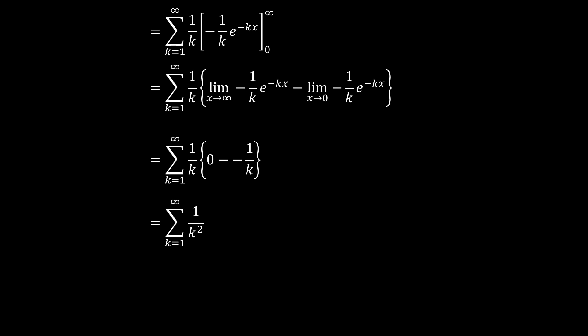This is a famous summation. If you are not familiar with it, search for the Basel problem. When you sum 1 over k squared from k equals 1 to infinity, the answer is pi squared over 6. And so that is the answer that was being sought.